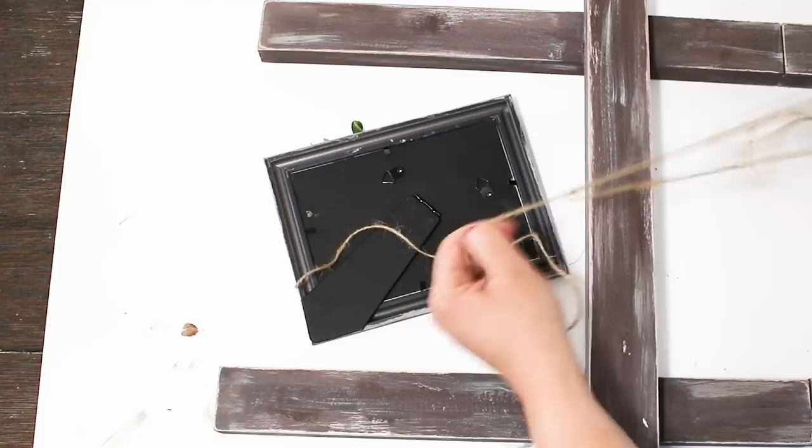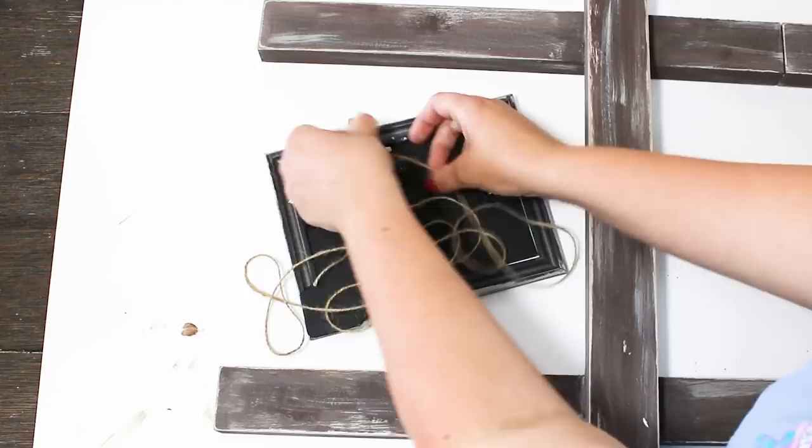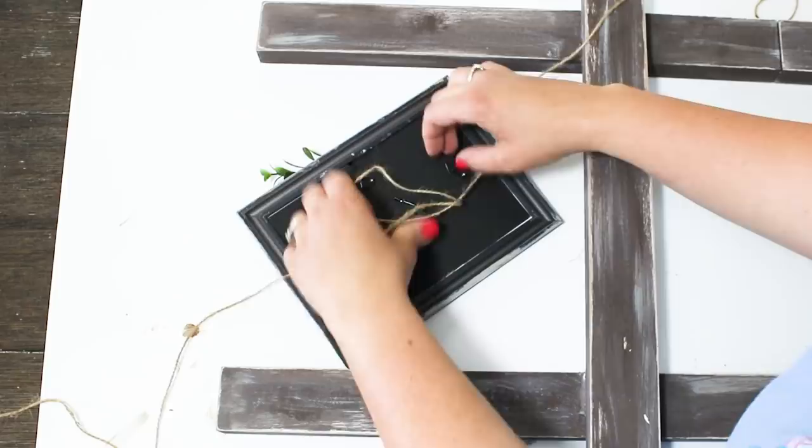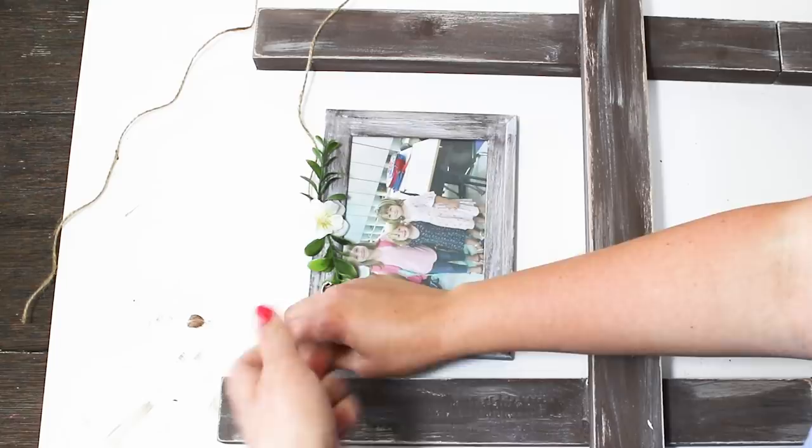There are a ton of different ways that you could attach these frames onto this ladder. I just wanted them to kind of dangle by this jute string, so I am just tying a knot on the hanger and then I tied it around each side of the ladder.